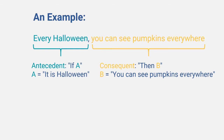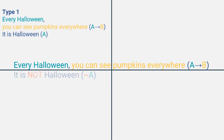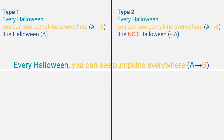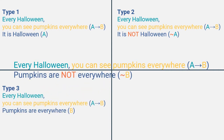The four possible minor premises are these. Example 1: 'It is Halloween' — affirming the antecedent, or A. Example 2: 'It is not Halloween' — denying the antecedent, or not A. Example 3: 'I can see pumpkins everywhere' — affirming the consequent, B. Example 4: 'I cannot see pumpkins everywhere' — denying the consequent, or not B.